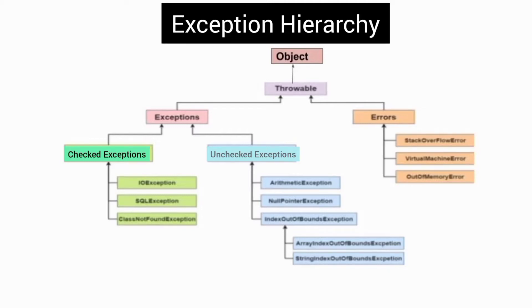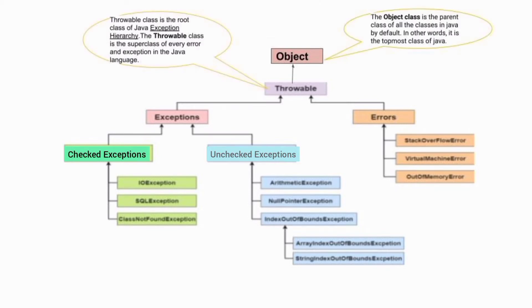Hi everyone, welcome back to this channel. Today we will understand the exception hierarchy in Java. The Throwable class is the root class of Java exception hierarchy and is an immediate subclass of Object class. Object class is the parent class of all subclasses in Java by default. In other words, it is the topmost class of Java.